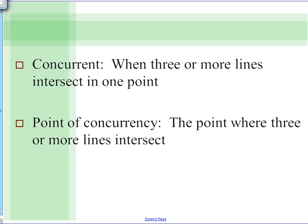For this particular lesson there are a couple vocab words. The first is 'concurrent,' which is when three or more lines intersect in one point — basically at one spot. The second is 'point of concurrency,' which is that point where the three or more lines intersect.